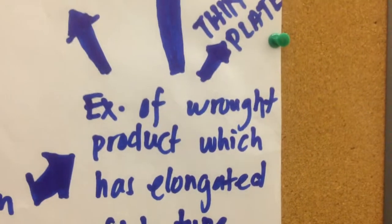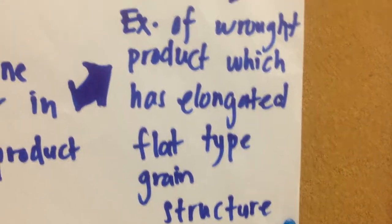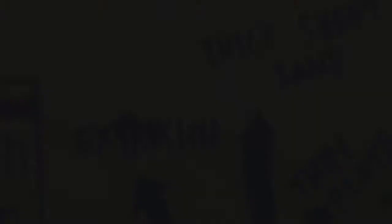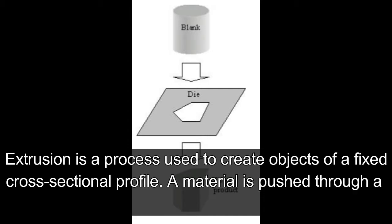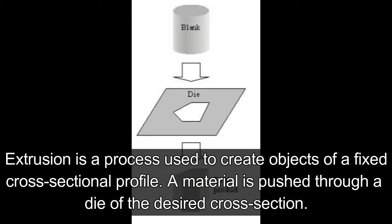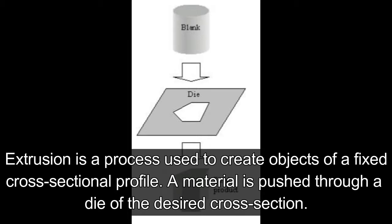The example of wrought products with elongated flat type grain structure are extrusions. Extrusion is a process used to create objects of a fixed cross-sectional profile. A material is pushed through a die of the desired cross section.